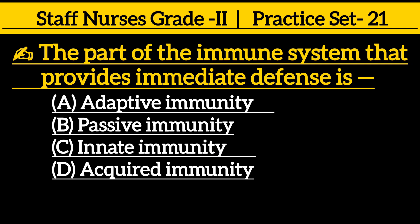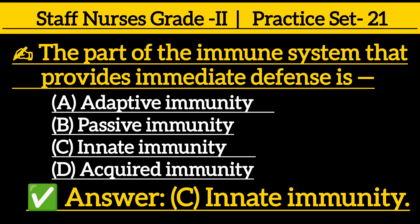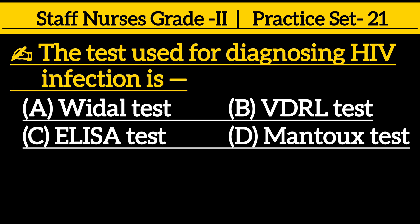The part of the immune system that provides immediate defense is: Option A, adaptive immunity; Option B, passive immunity; Option C, innate immunity; Option D, acquired immunity. Correct answer is Option C, innate immunity.